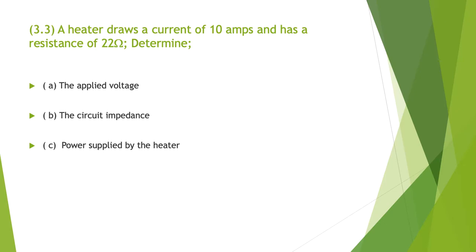Question 3.3: a heater draws a current of 10 amps and has a resistance of 22 ohms. It's a heater, a heater does not have capacitance or inductance, it's purely resistive so we can stick to Ohm's law approach. We want to know what the applied voltage is, the circuit impedance, and the power supplied by the heater.